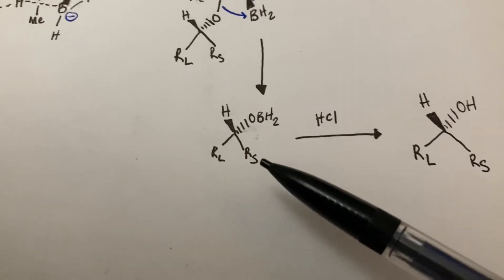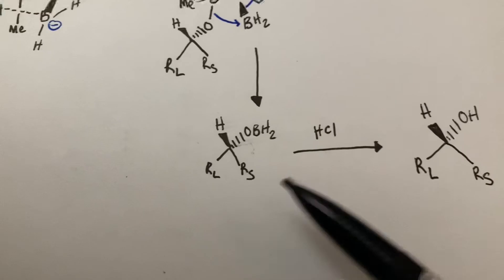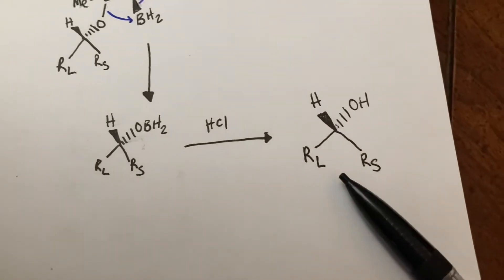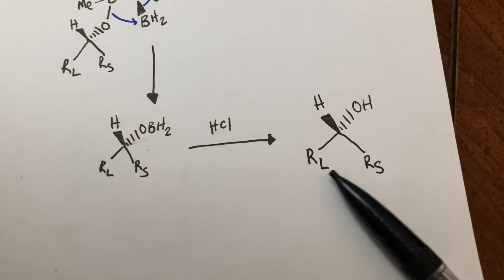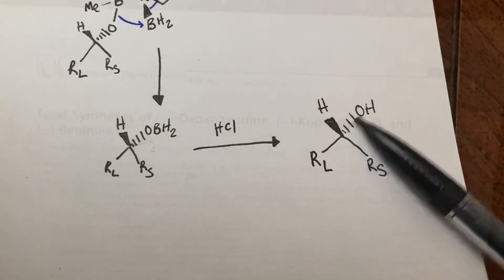So this is now a chiral alkoxyborane under very acidic conditions. It'll make this enantiomer of an alcohol with a large group and a small group, and then the alcohol in the back.